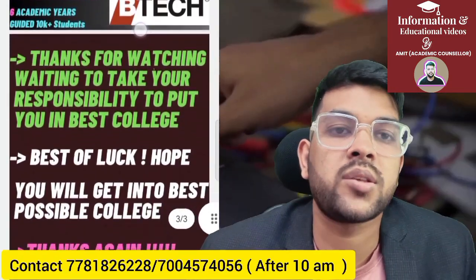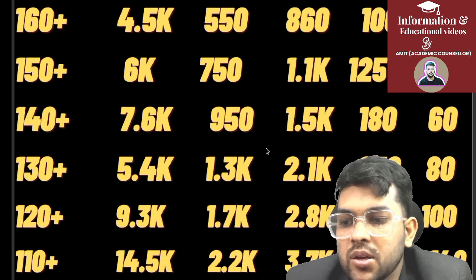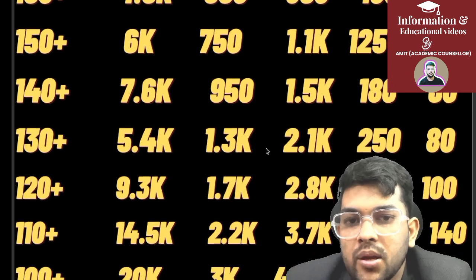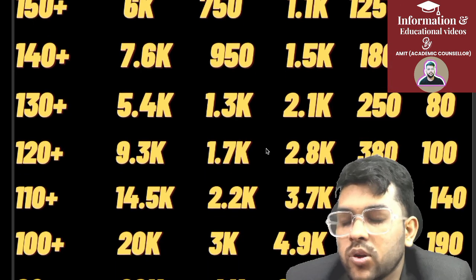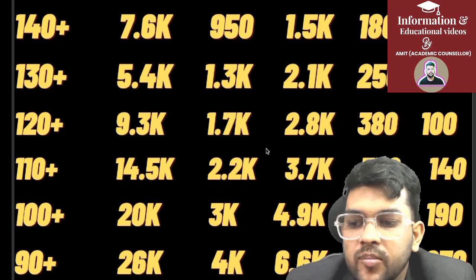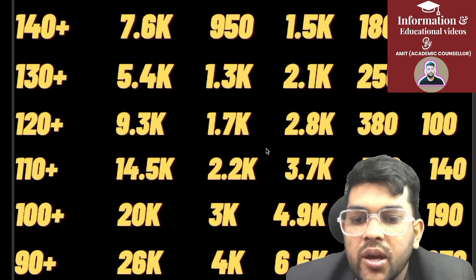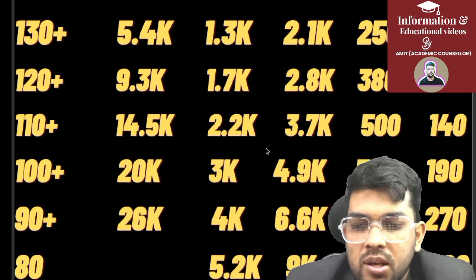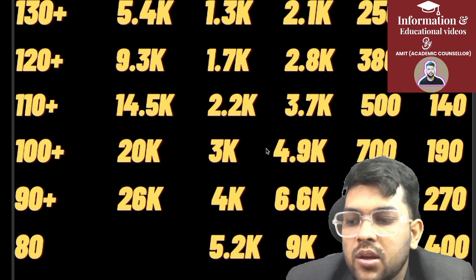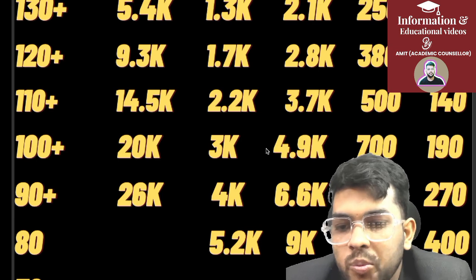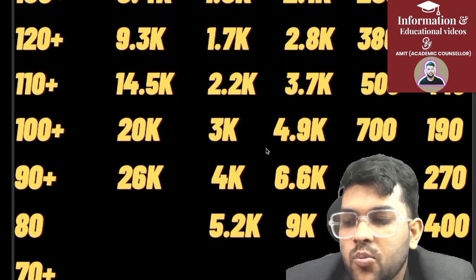For 120 marks: General rank 9,300, EWS 1,700, OBC 2,800, SC 380, ST 110. For 110 marks: General 14,500, EWS 2,200, OBC 3,750, SC 440, ST 144. For 100 marks: General 20,000, EWS 3,000, OBC 4,900, SC 700, ST 190. For 90 marks: General 26,000, EWS 4,000, OBC 6,600, SC 950, ST 270.